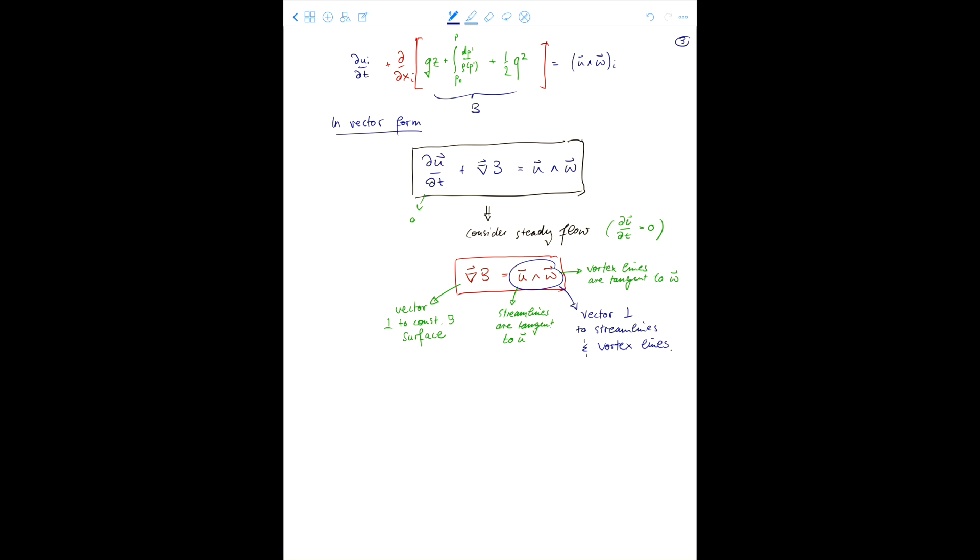That means that the constant b surface is parallel to the streamlines and the vortex lines. I.e., along the streamlines and along the vortex lines, b is constant. And that is the Bernoulli equation.